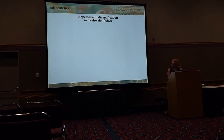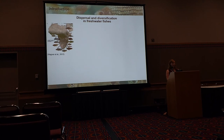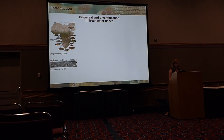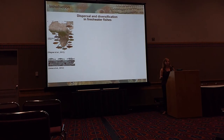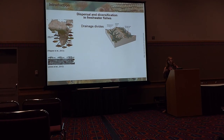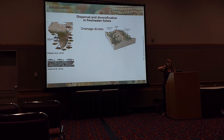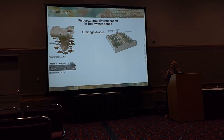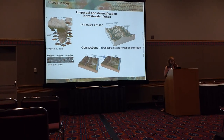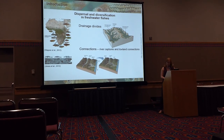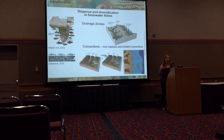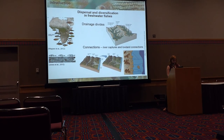Dispersal diversification in freshwater fishes — with some very classical exceptions such as cichlids in lakes in Africa and sticklebacks in lakes or between fresh and marine environments — is mainly explained by connections between river drainages. Drainage divides allow vicariance between populations, and temporary connections promoted by river captures and lowland connections are very important to allow dispersal and gene flow between those populations.